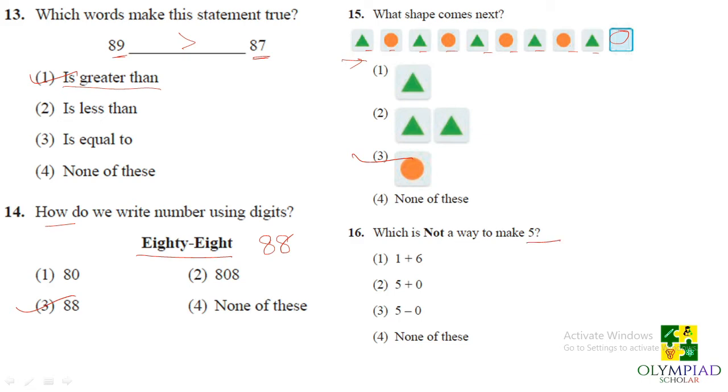Which is not a way to make 5? See you have to check what is the answer. So 1 plus 6 will be 7, 5 plus 0 equals to 5, 5 minus 0 equals to 5. So clearly this is not making 5. So it is not a way to make 5.